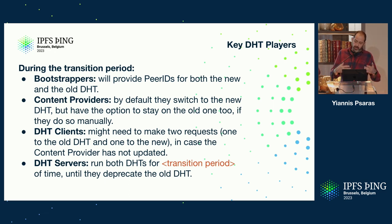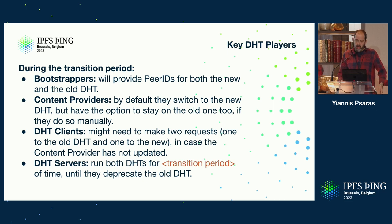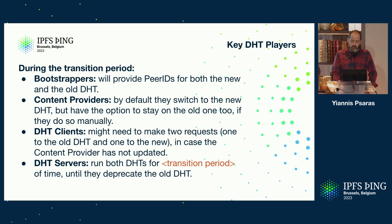During the transition period, the bootstrappers — a key part of the DHT network — should be providing peer IDs for both the new and old DHT, so that a new DHT client or server getting into the network has peers to connect through. Content providers, especially the big ones, should by default switch to the new DHT on the transition date. They do have the option to stay in the old DHT and keep providing content, but they'll have to do so manually by choosing the right option in the IPNS key or their own codebase.